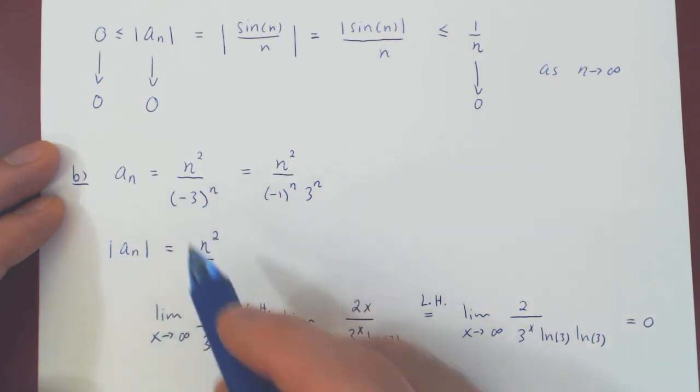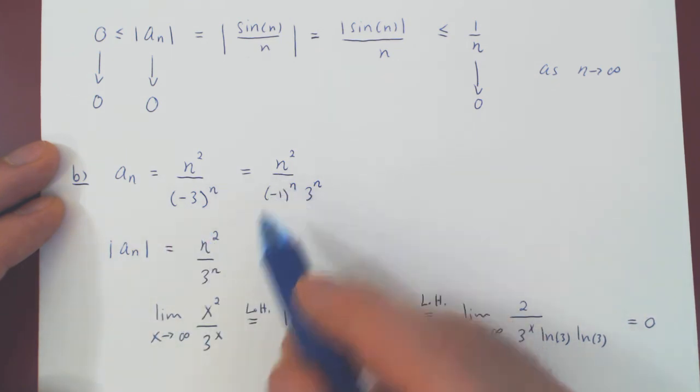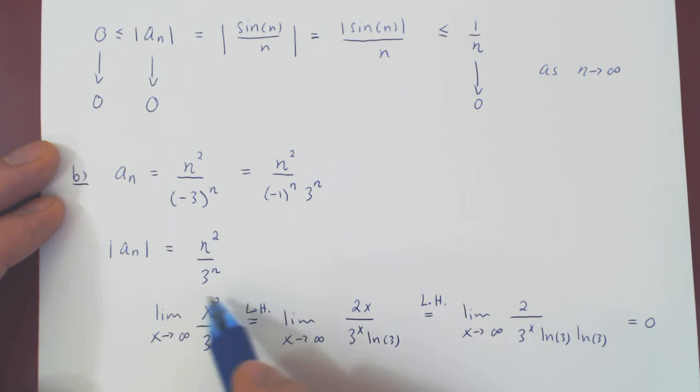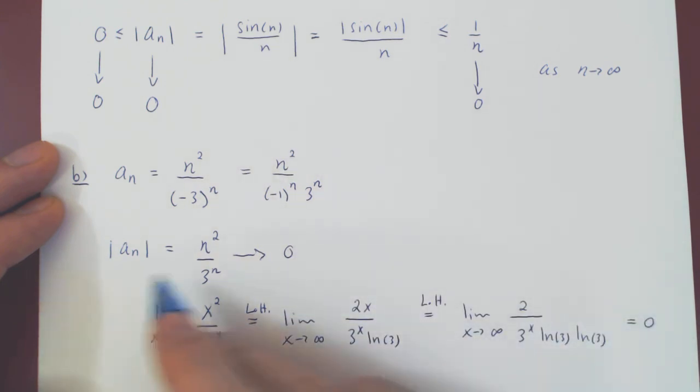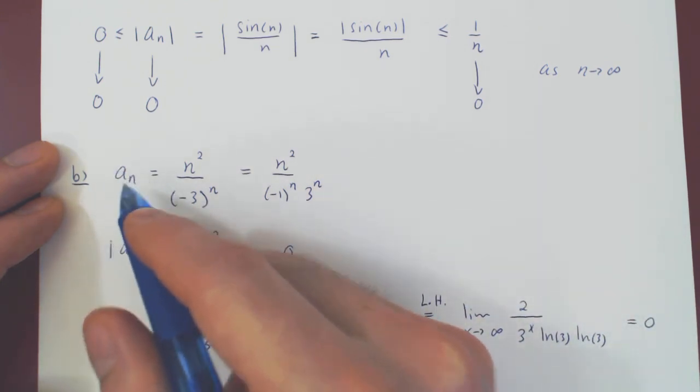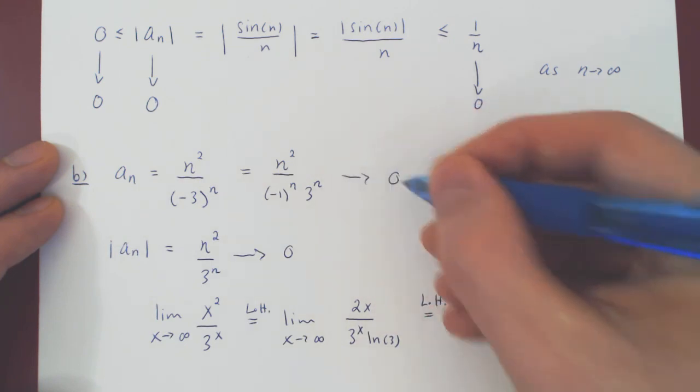And you see, by dropping the alternate sign here with the absolute value, now we can use L'Hôpital's rule. The limit is 0. So in the absolute value, a_n does converge to 0. Therefore, we can drop the absolute value in a_n, it still converges to 0. And that's it.